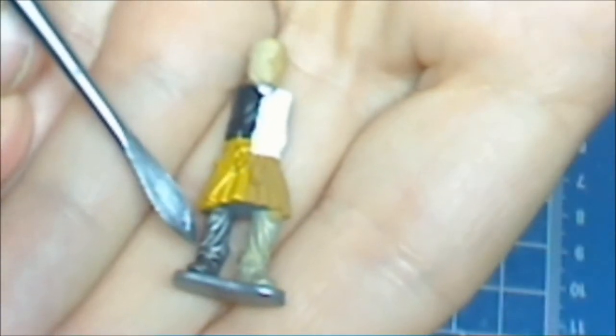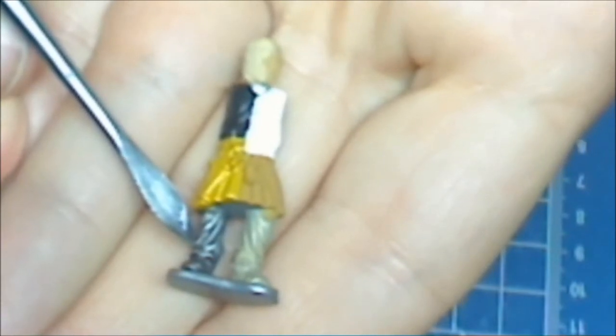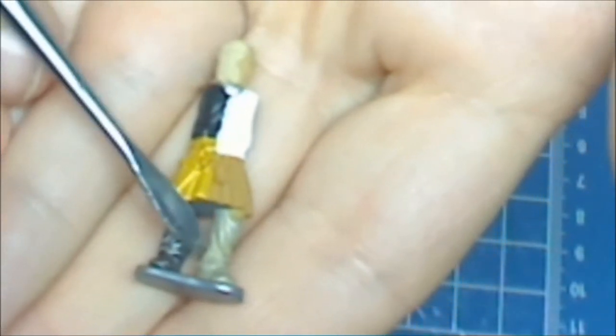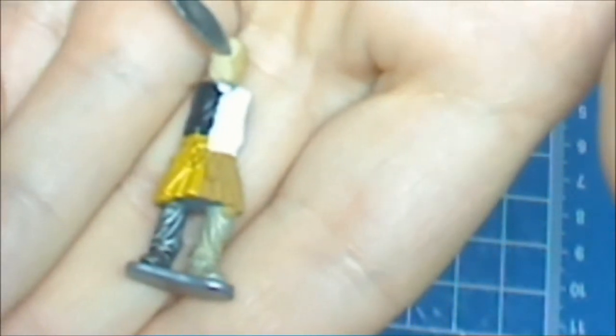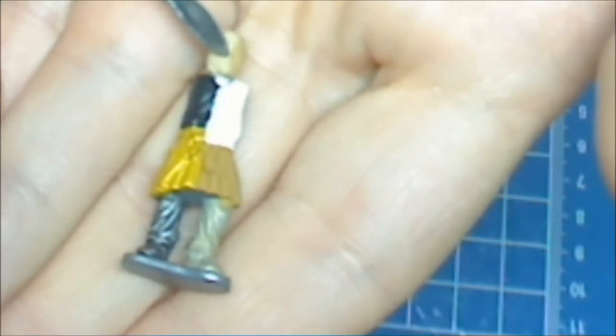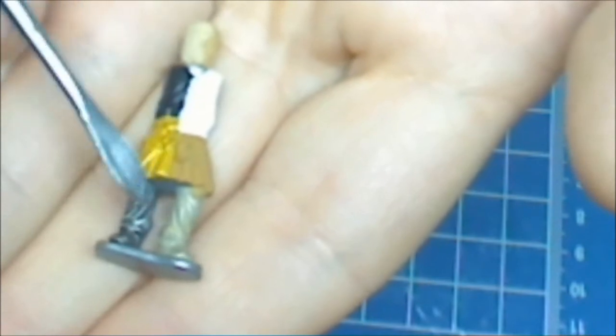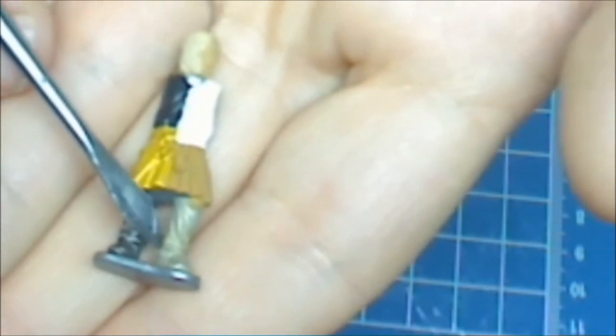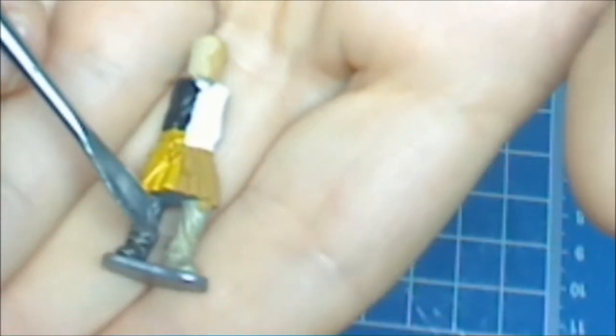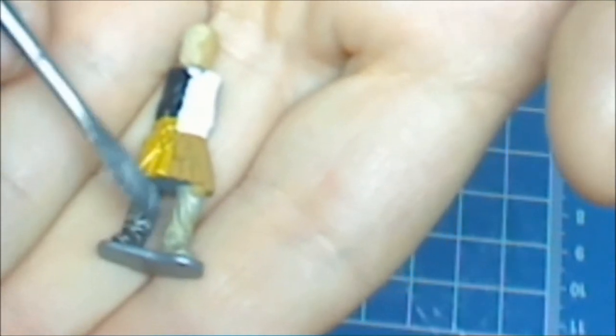Here on this leg is Badab Black Wash. And then on this side I took this Reaper High Definition paint and I made a paint wash out of it. And I went and washed that. It's kind of hard to tell, but I just wanted to see what it would look like.